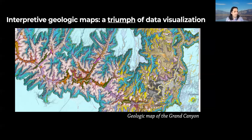This is kind of the height of the data products we have produced as geoscientists, in terms of information density and what it conveys about the geologic record. This is a super classic example — just the Grand Canyon — which conveys a lot of structural geologic information and information about the progression of geologic time in a pretty colorful thing that geologists can understand and show off to non-geologists as well.